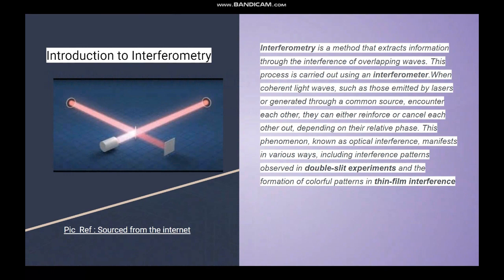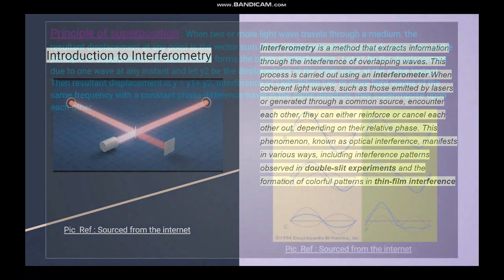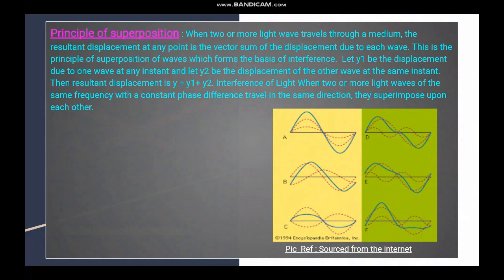When they come from a common source and encounter each other, they can either reinforce or cancel each other out depending on their relative phase. This phenomenon is known as optical interference, and it manifests in various ways, including interference patterns observed in double-slit experiments and the formation of colorful patterns in thin-film interference.